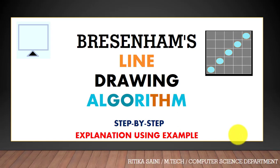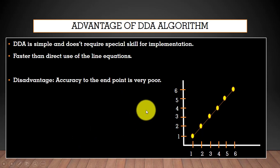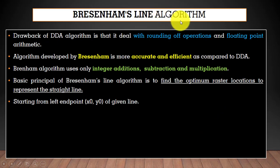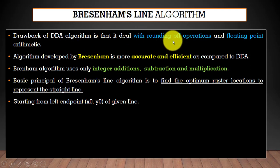Hello. In this video you will learn Bresenham's line drawing algorithm step by step using a numerical example. As in the previous video, we were talking about different types of line drawing algorithms: DDA algorithm, Bresenham algorithm, and midpoint algorithm. The advantage of DDA algorithm is it is simple and faster, but the disadvantage is that accuracy at the endpoint is very poor. Also, DDA deals with rounding operations and floating point arithmetic.